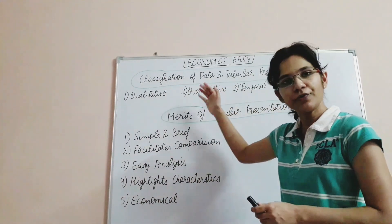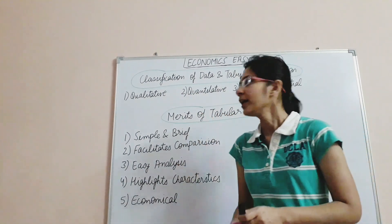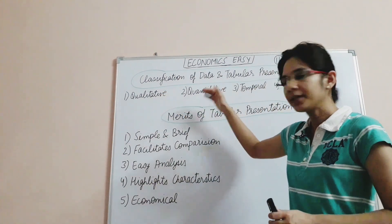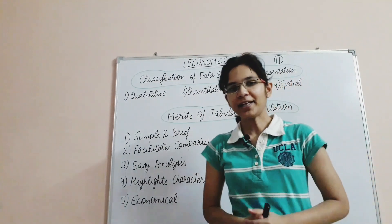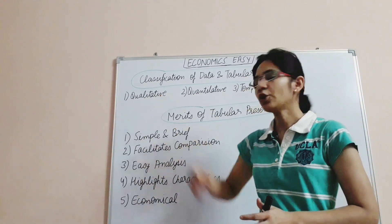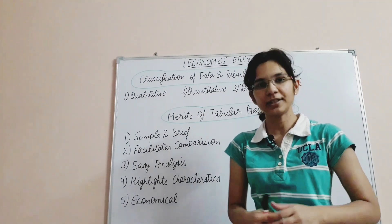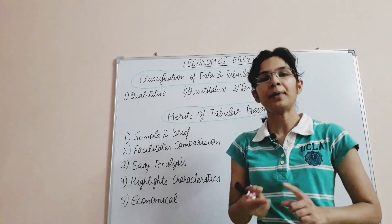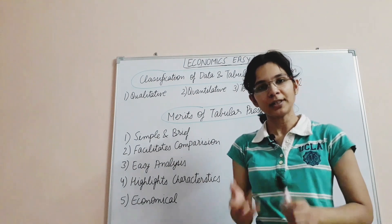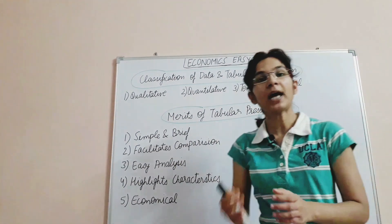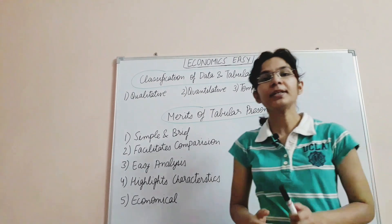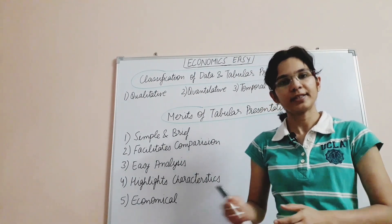Now comes the last topic: classification of data and tabular presentation. The third type is temporal classification — based on time — for example, data for 2015, 2016, 2017, and so on. The last is spatial classification — spatial means according to location — for example, data for Rajasthan, Gujarat, Punjab, and so on.